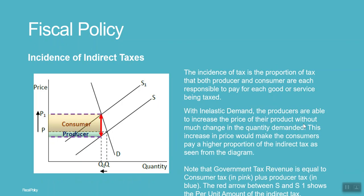The incidence of tax is the proportion of tax that both producer and consumer are each responsible to pay for each good or service being taxed. With inelastic demand, producers are able to increase the price of their product without much change in the quantity demanded. This increase in price makes consumers pay a higher proportion of the indirect tax, as seen from the diagram.